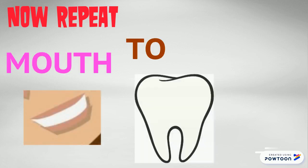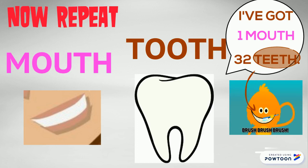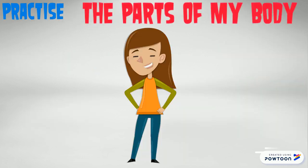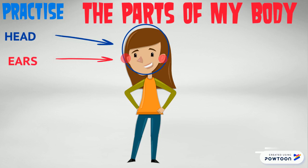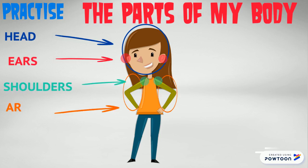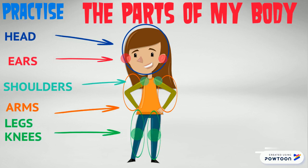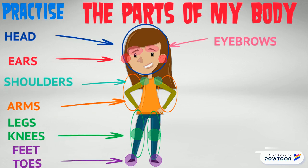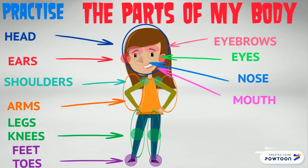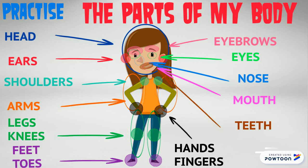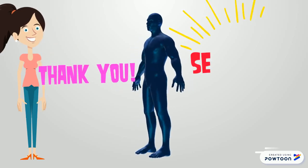Mouth. Tooth — I've got one mouth, 32 teeth. Now practice the parts of my body: head, ears, shoulders, arms, legs, knees, feet, toes, eyebrows, eyes, nose, mouth, teeth, hands, fingers. Thank you, see you, bye bye!